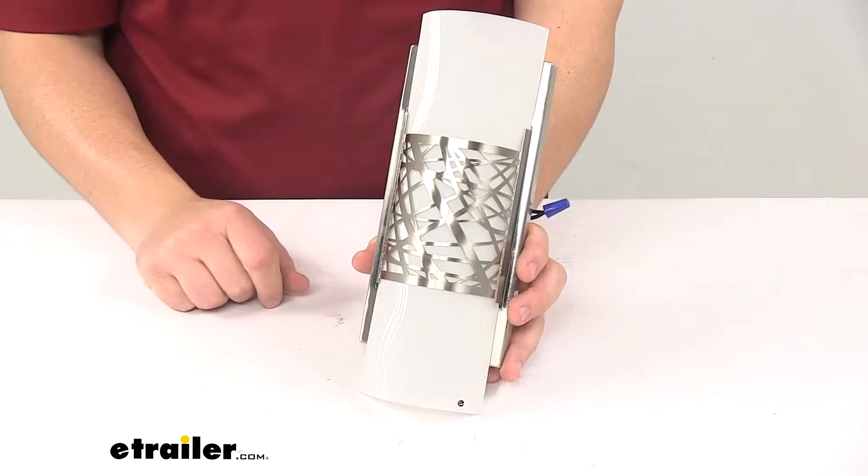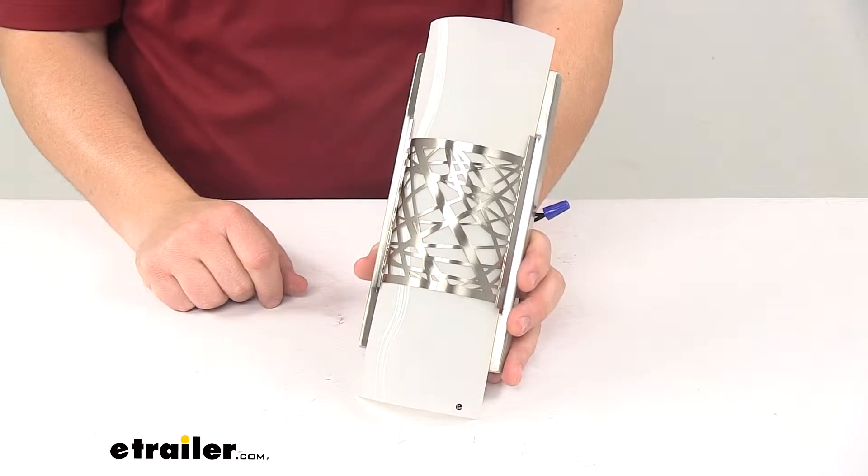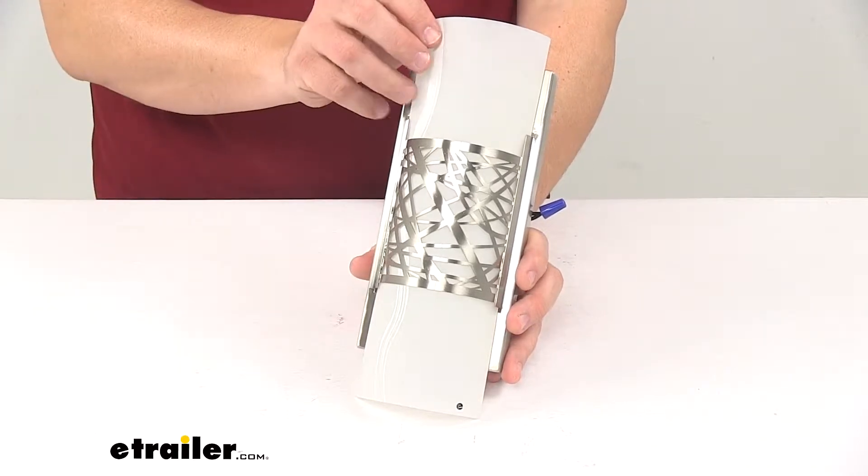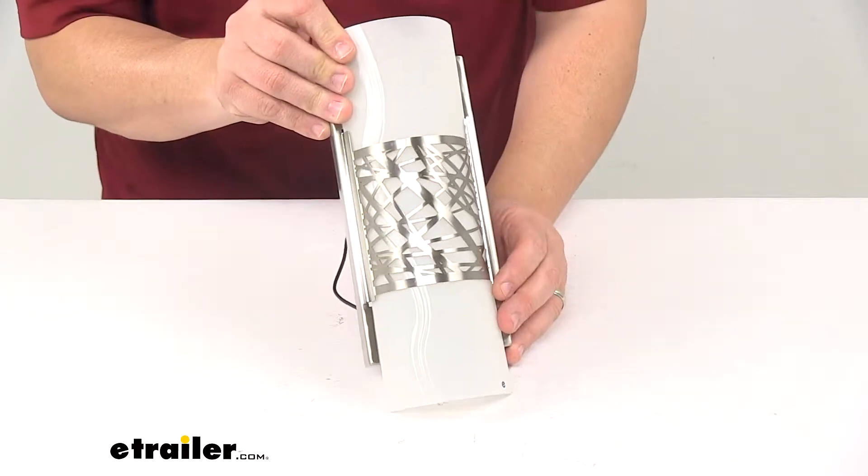Today we're taking a look at a Gustafson RV LED sidewall light. This sidewall light illuminates the interior of your RV or camper.